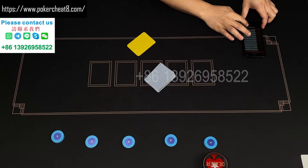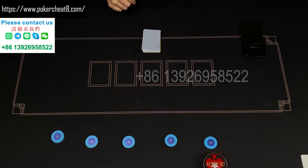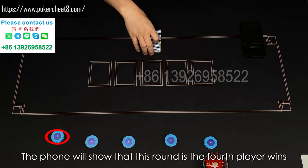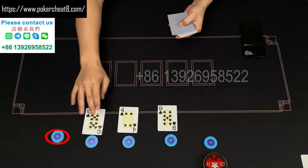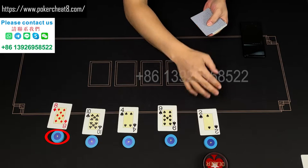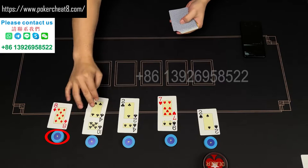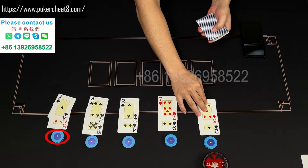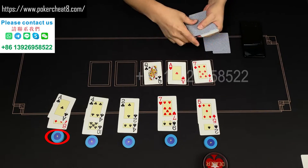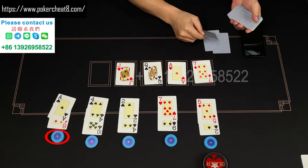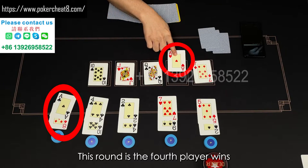Turn on the phone. The phone will show that this round is the fourth player wins. This round is the fourth player wins.